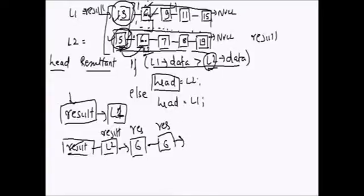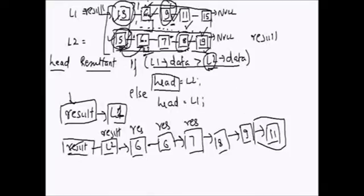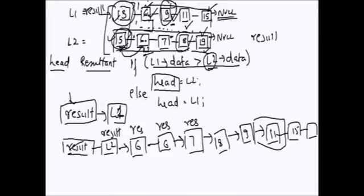We continue comparing and adding: 6, 6, 7, 8, 9 are added in order. Then 11 and 19 are compared — 11 is added because it is less than 19, then 15 is compared with 19 and 15 is added. Once one linked list is exhausted (reaches null), all remaining nodes of the other linked list are appended as-is since they are already sorted and greater.